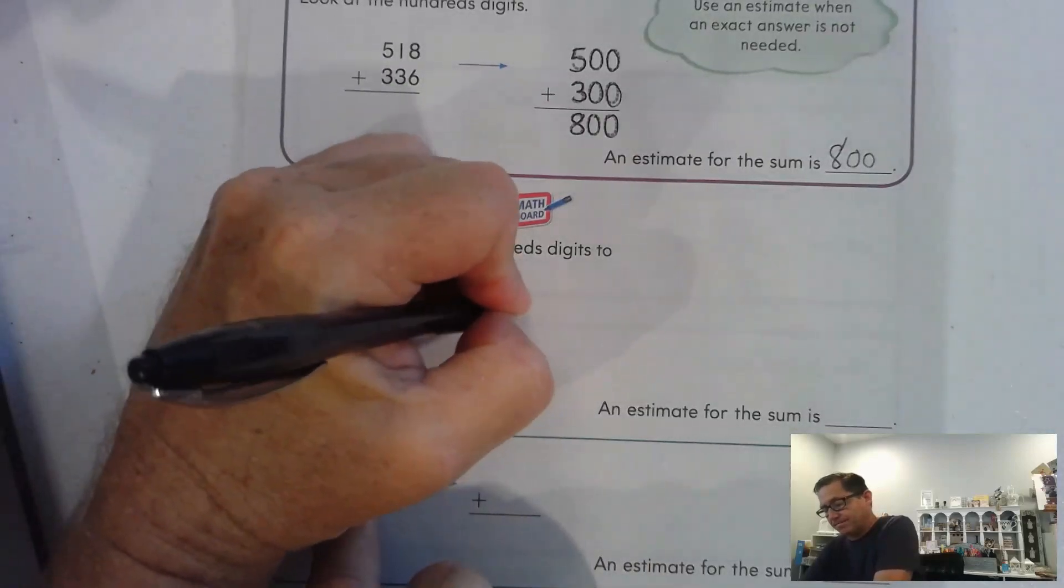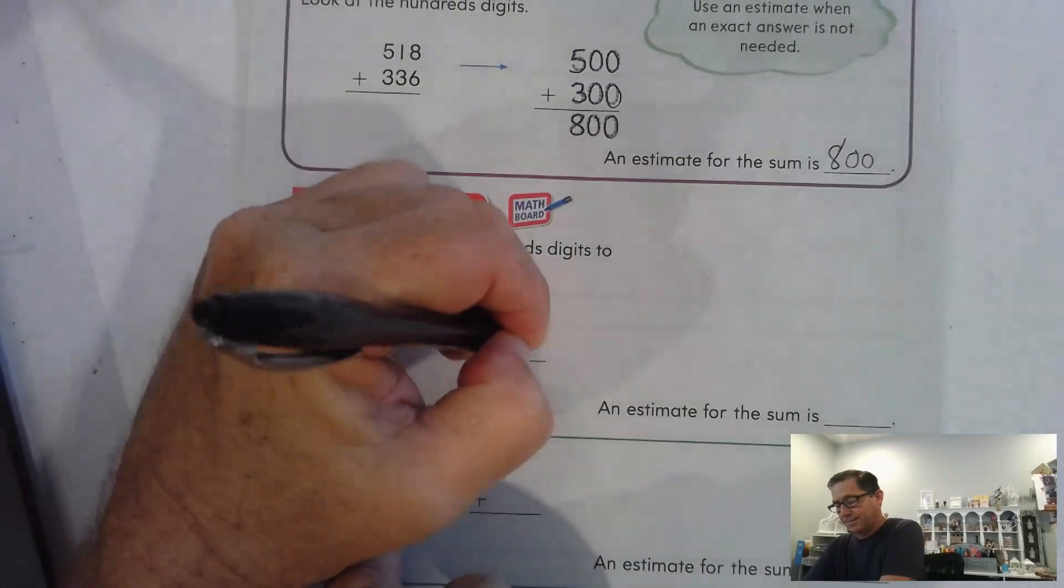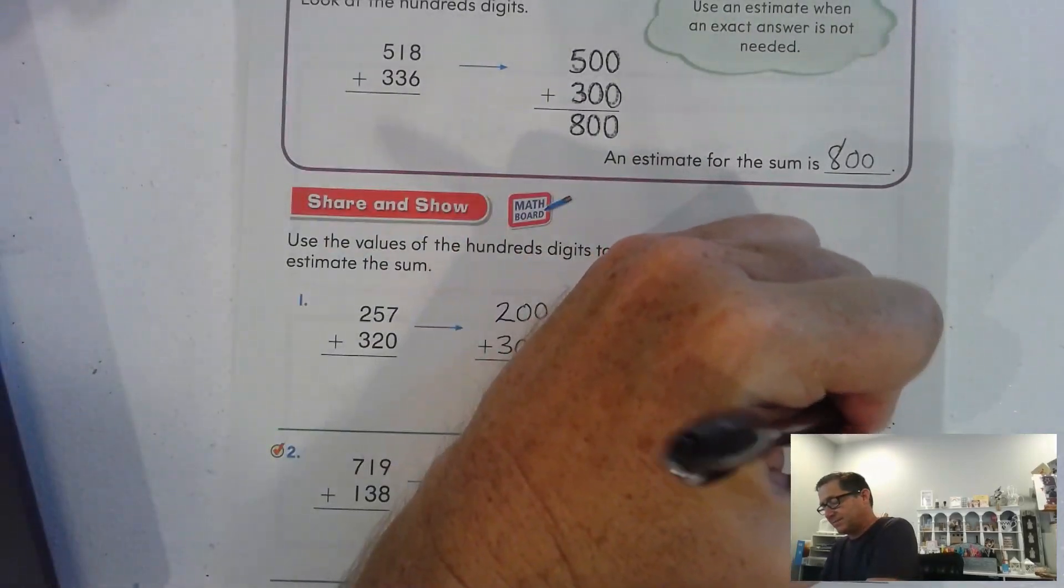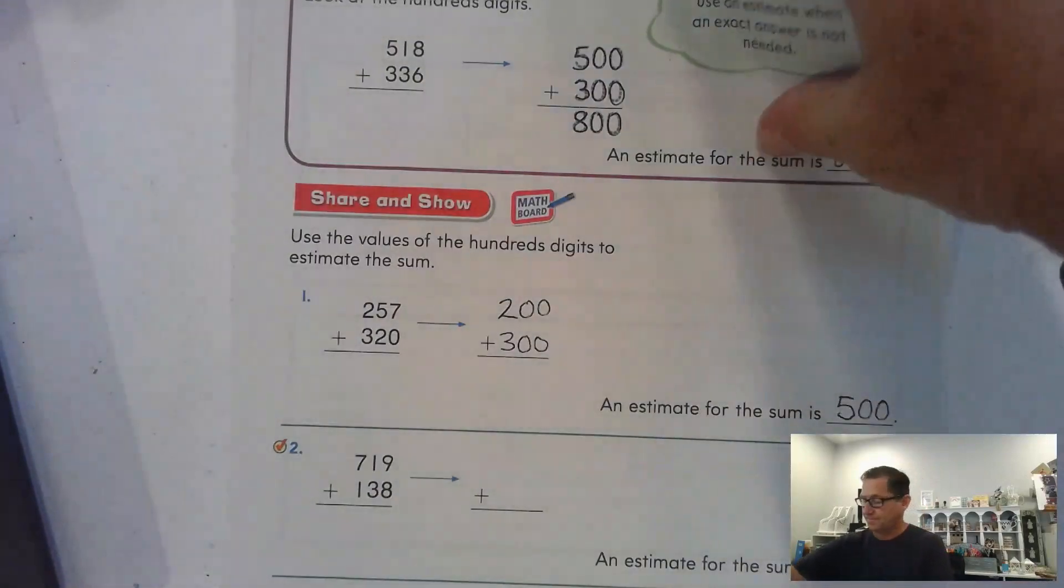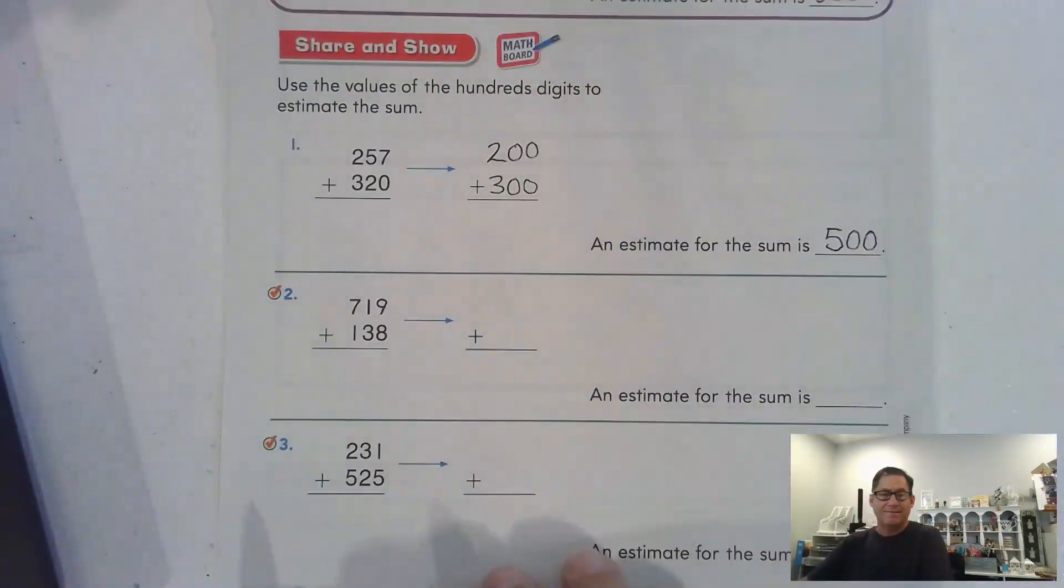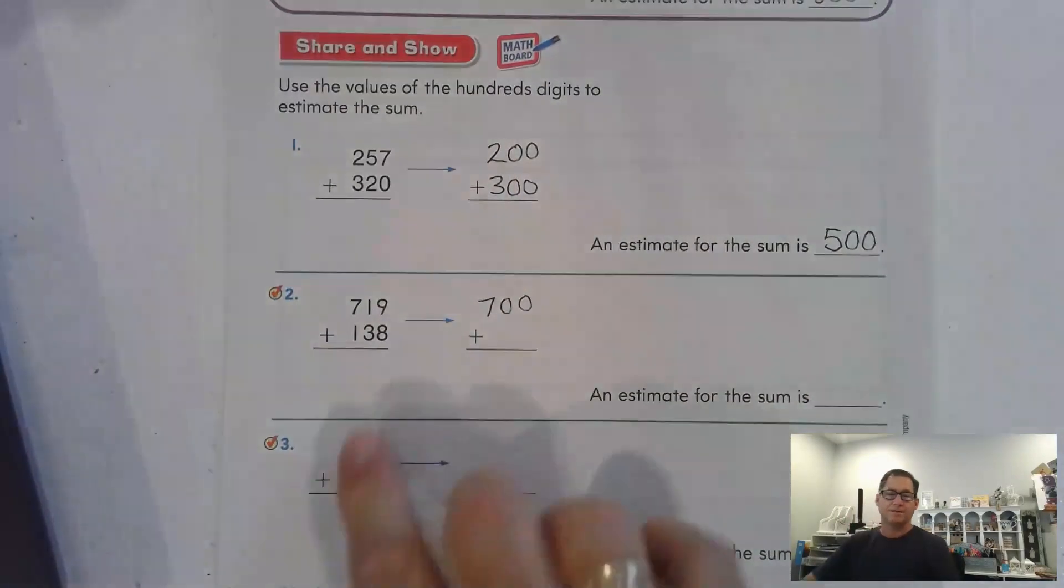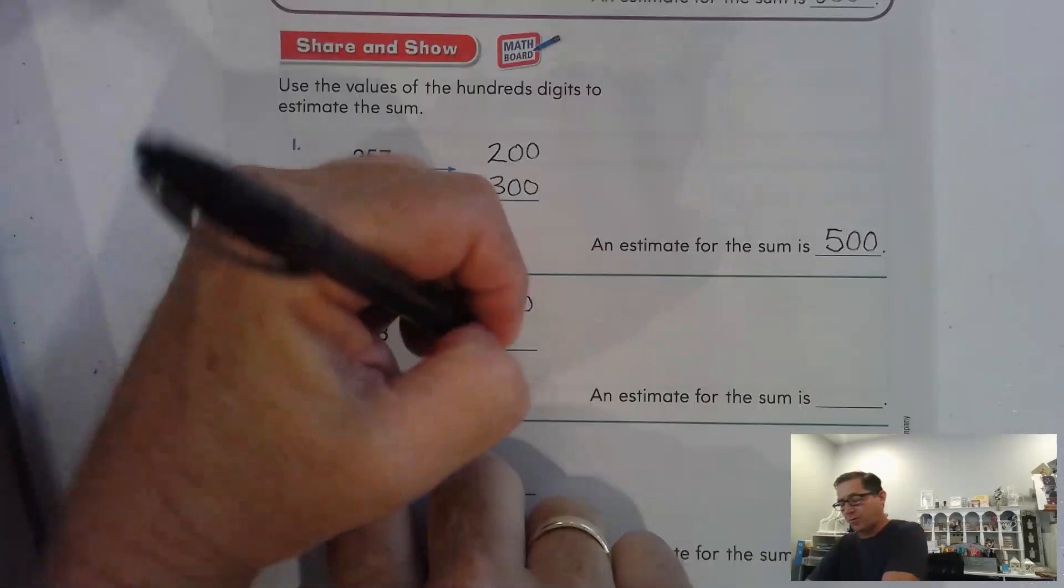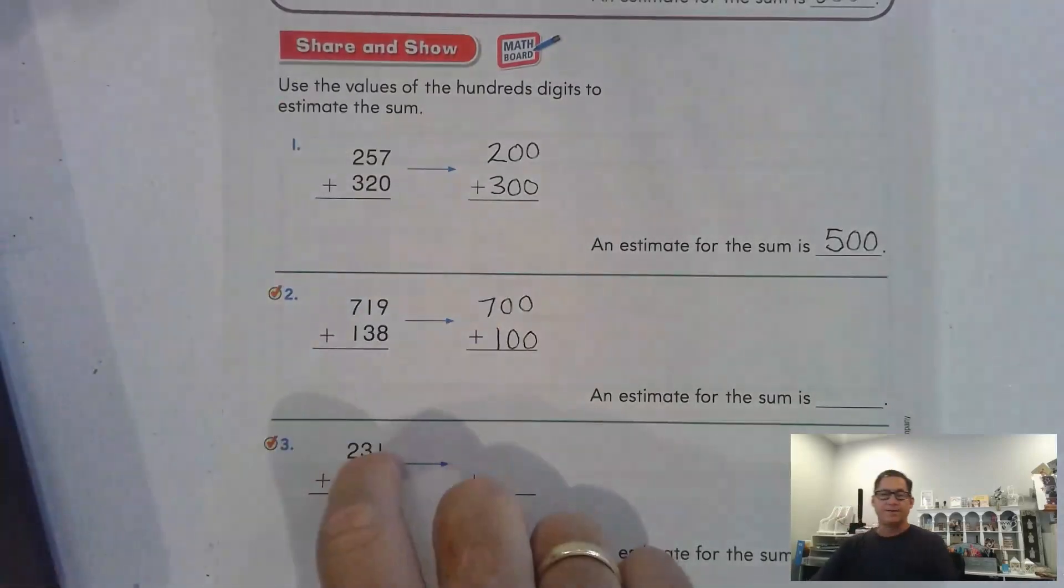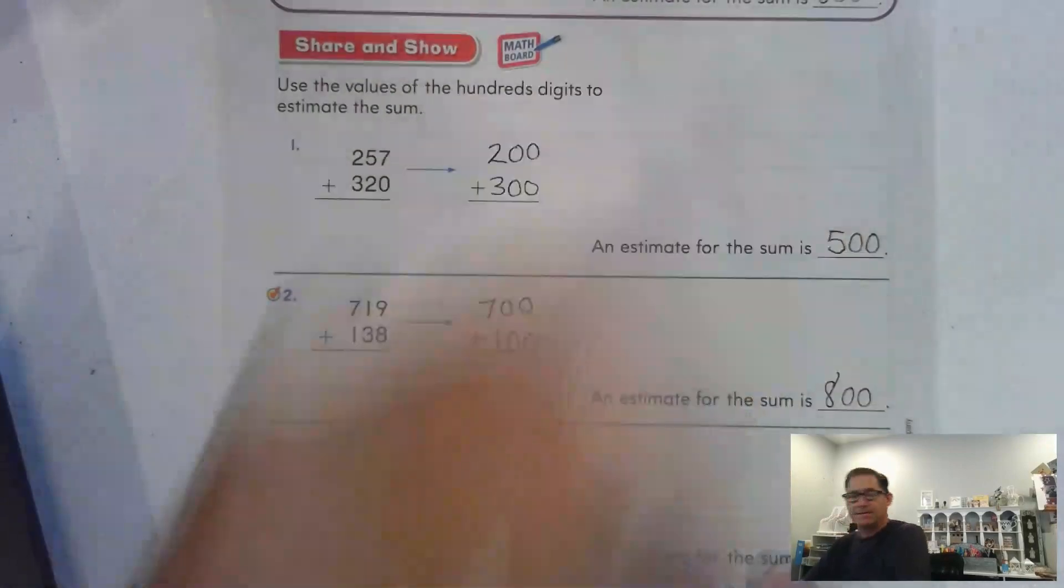So, 200 plus 300. That gives us a reasonable estimate of 500. 719. Just look at the hundreds. There's seven hundreds. In 138, there are 100. So, a reasonable estimate for this is 800.